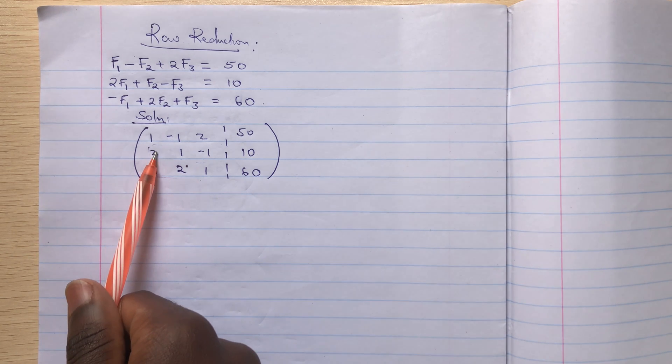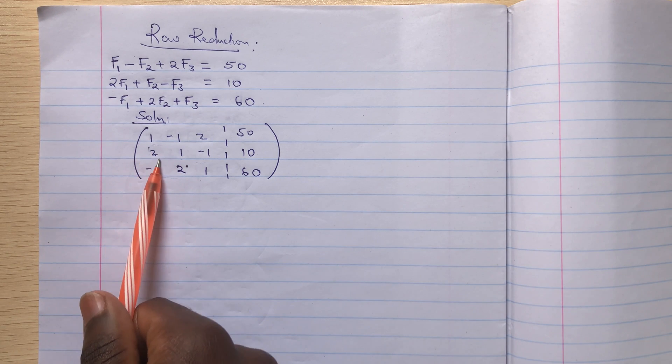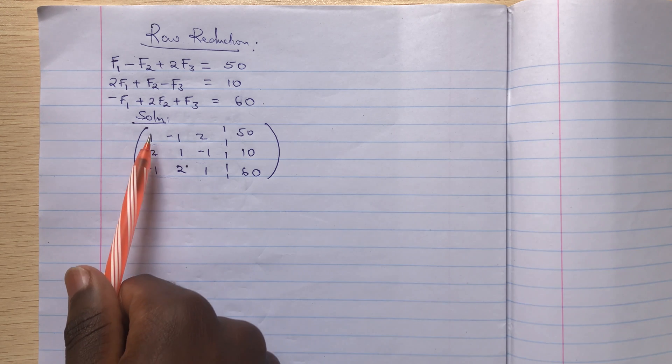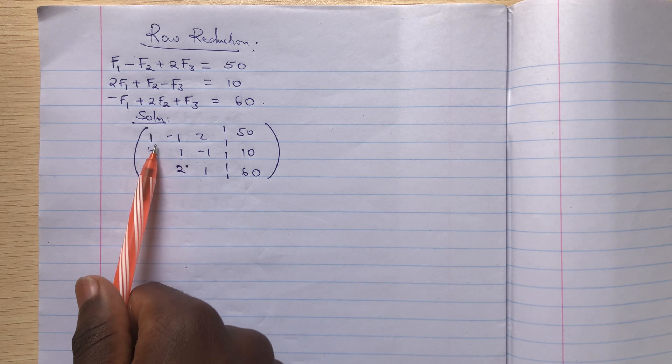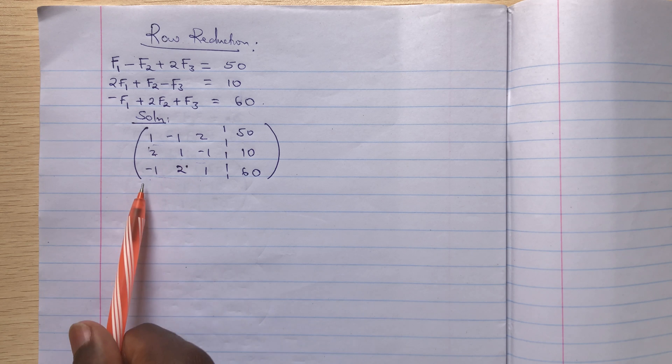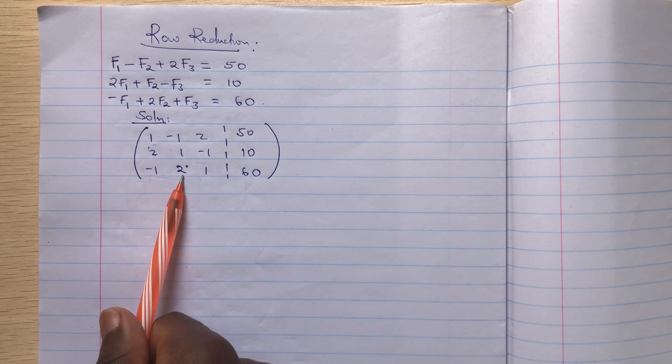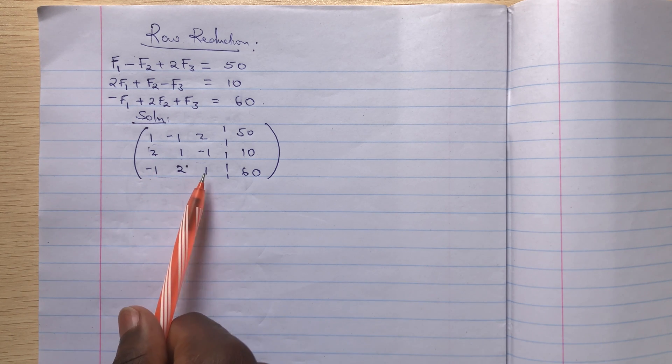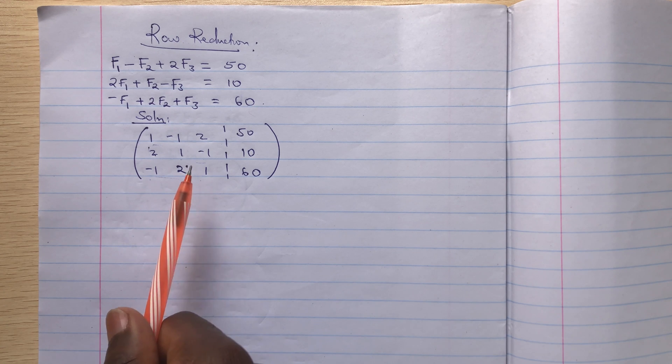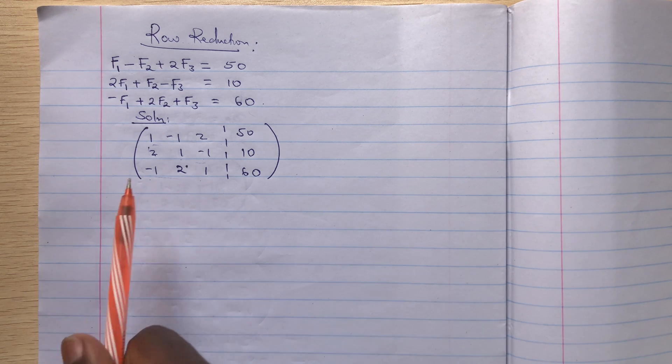So what we'll do is we will eliminate one unknown from this row, this will remain untouched, we'll eliminate one unknown here, then in the next row we'll eliminate two so that we remain with only one unknown for easy calculation. So let's get to that.